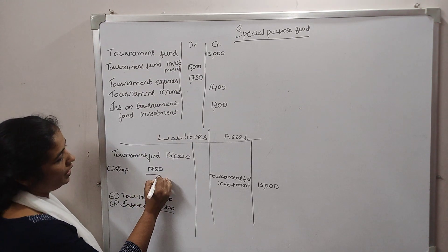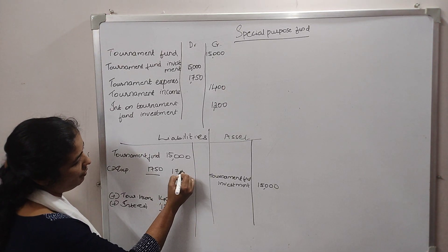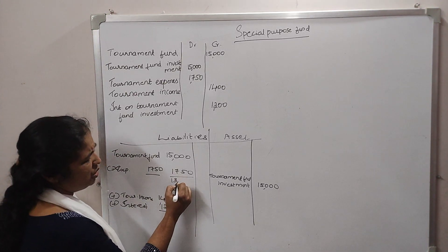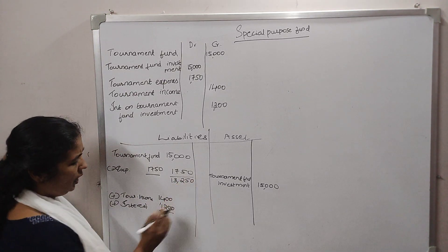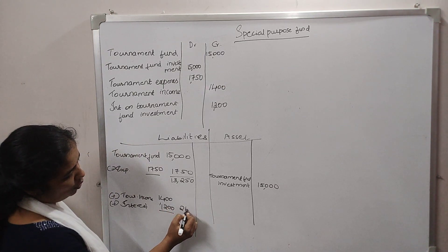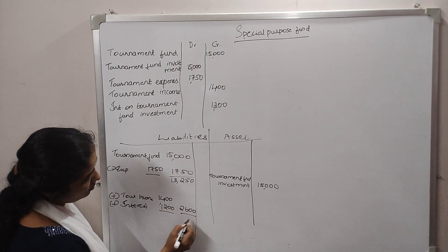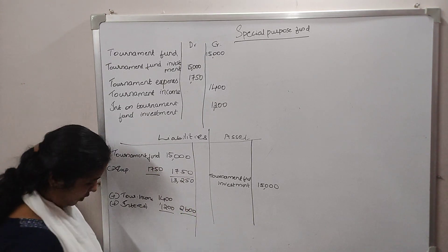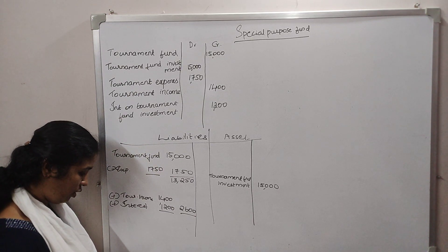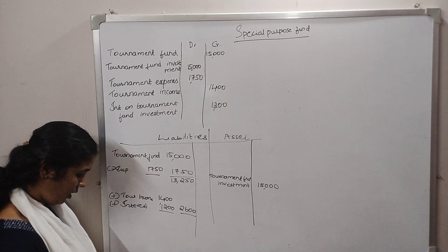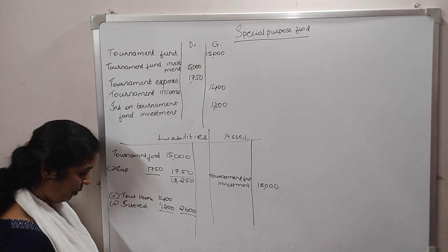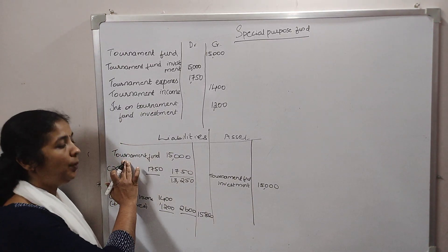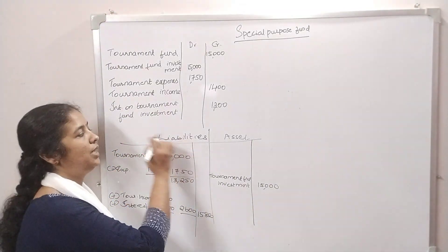We get to the expenses: $1,750. So 15,000 plus 1,200 gives 15,850, then minus 1,750 gives 13,250. We add 2,600 here. So 13,250 plus 2,600 gives us $15,850.